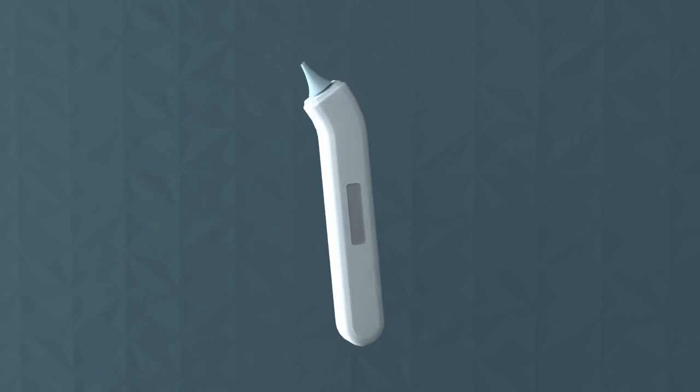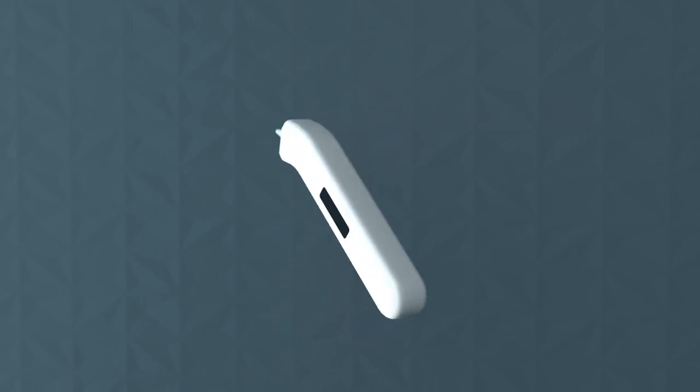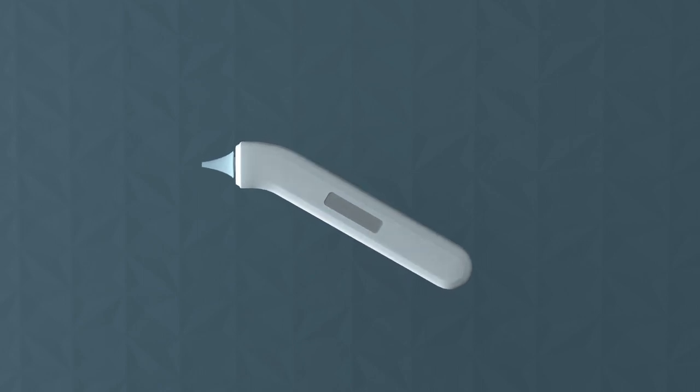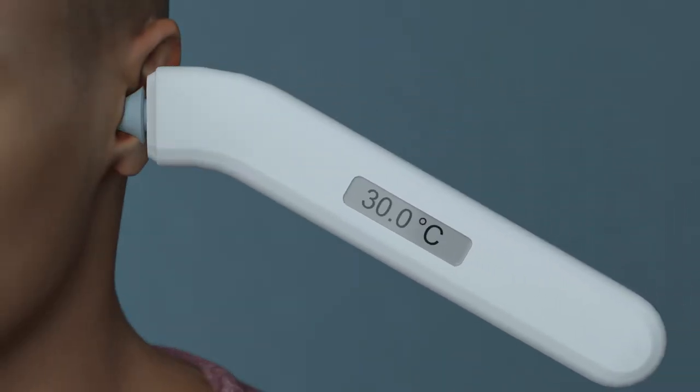Ear thermometers, also called tympanic thermometers, offer a quick and easy way to check the body temperature by measuring the infrared radiation emitted by the body. Of course, this requires that the ear thermometer performs very accurate measurements.